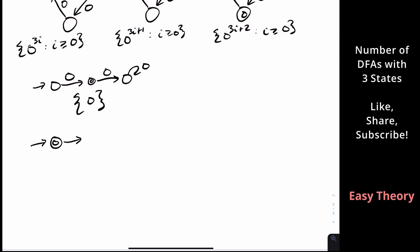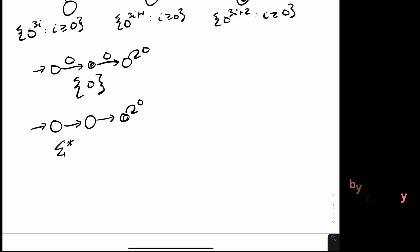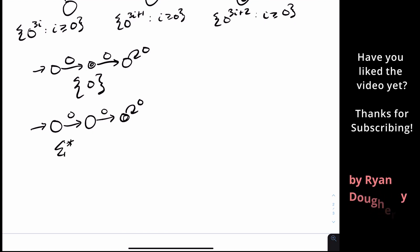We can also add the empty string to get {epsilon, 0}. And we can have the third state on the right be final with the first two non-final, which gives sigma star minus epsilon and zero — all strings except the empty string and zero.